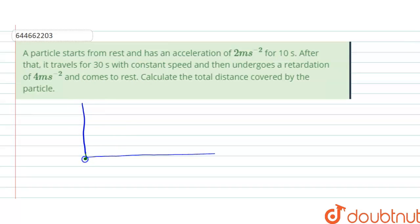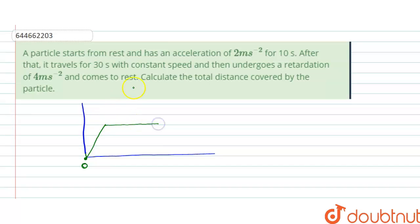Starting from the origin, the particle is accelerating at 2 meters per second squared. After reaching a certain velocity, it then travels at constant speed for 30 seconds.